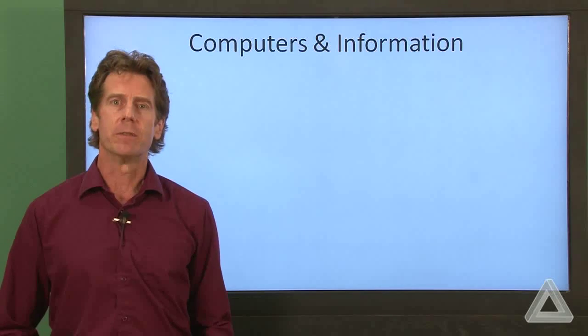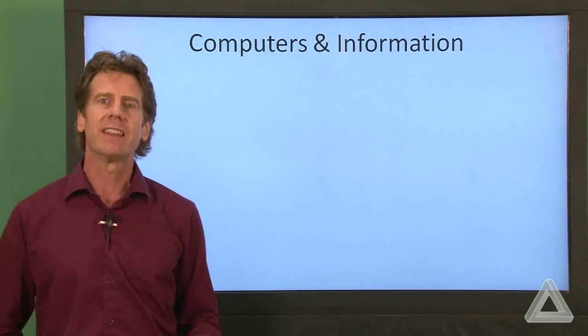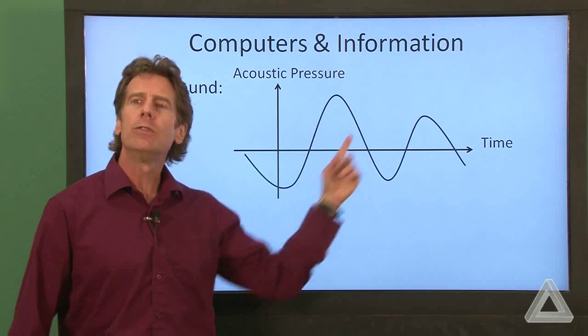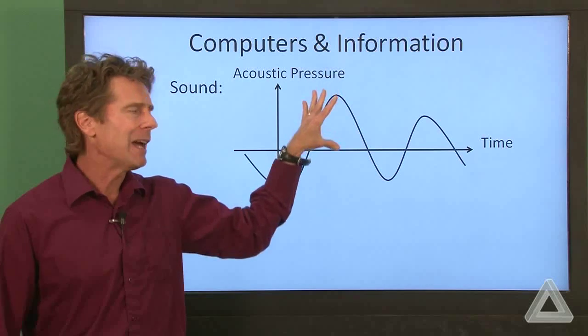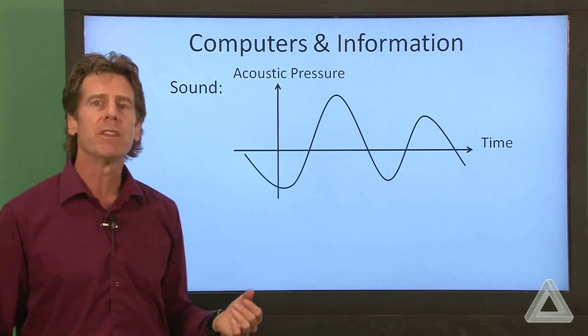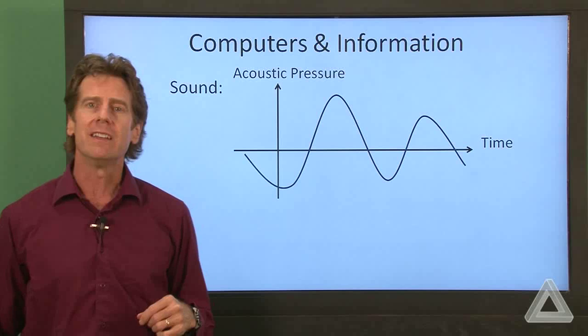Another thing you can do on your computer is listen to music. Well, what about music? How do you represent that with bits? So with sound, you can think of that as an acoustic pressure that varies with time. And the amplitude, the height of these deviations, is the volume of the sound. And how rapidly these wiggles show up is the frequency.